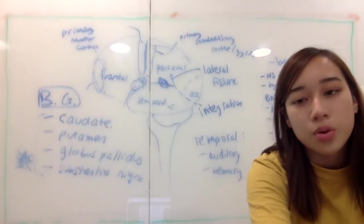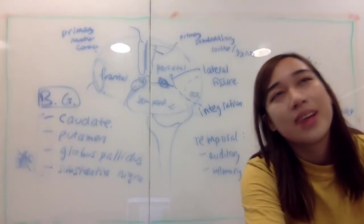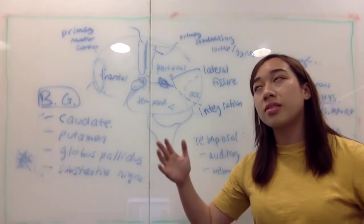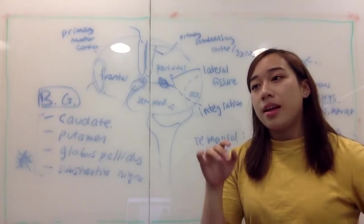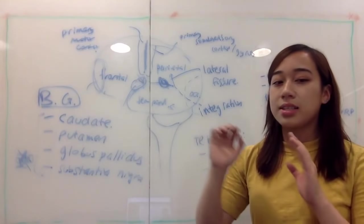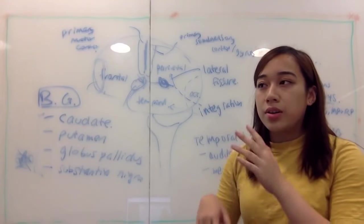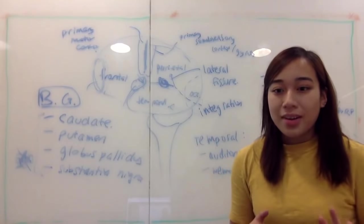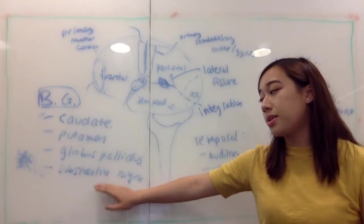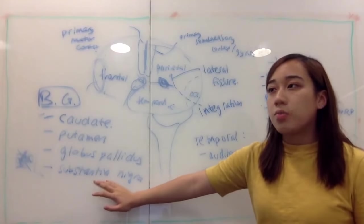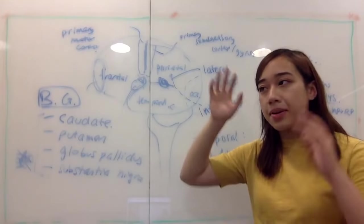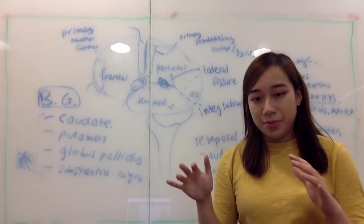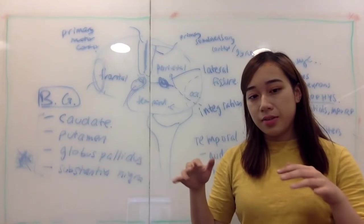Serotonin is usually more associated with happiness and mood rather than dopamine, and that's why in depression they consider both the dopamine hypothesis and the serotonin hypothesis. The role of substantia nigra dopamine is to inhibit movement — so when you get damage to it, that's how you develop the tremors and rigidity of Parkinson's.